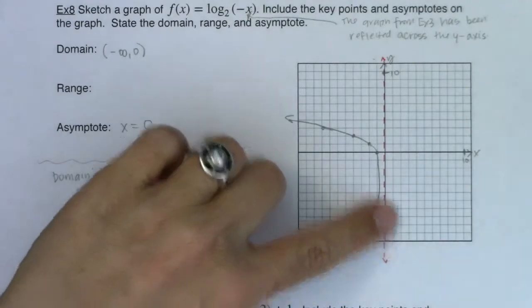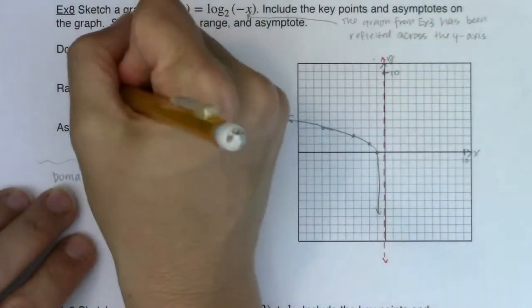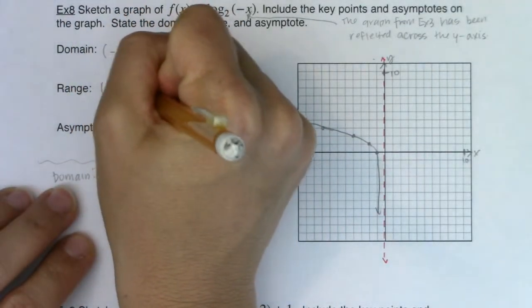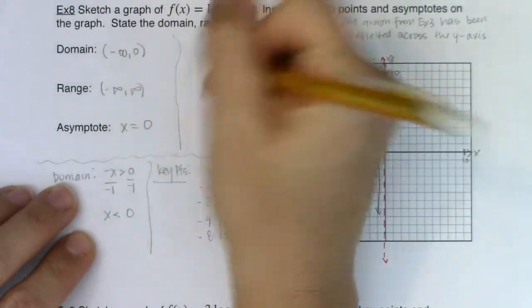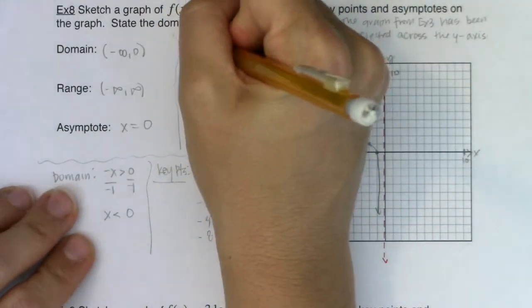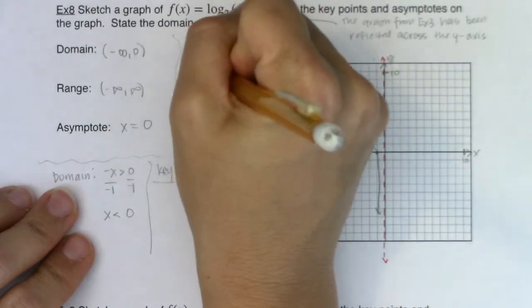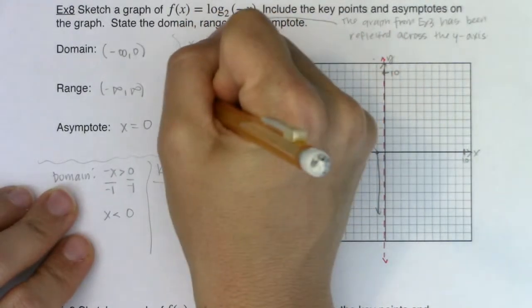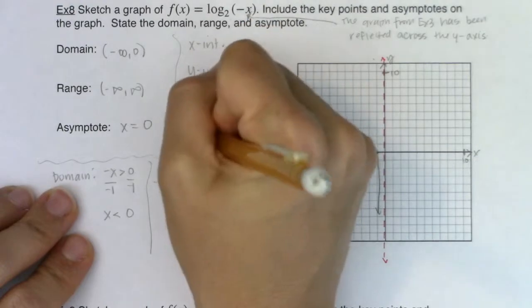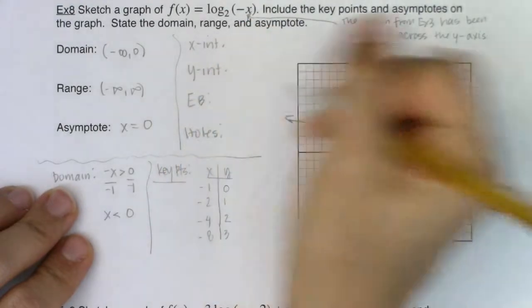And from here, I can see my range. It's negative infinity to positive infinity. And if we're going to stay consistent and just go for the other traits, if I want to look at x intercepts, y intercepts, end behavior, and holes.